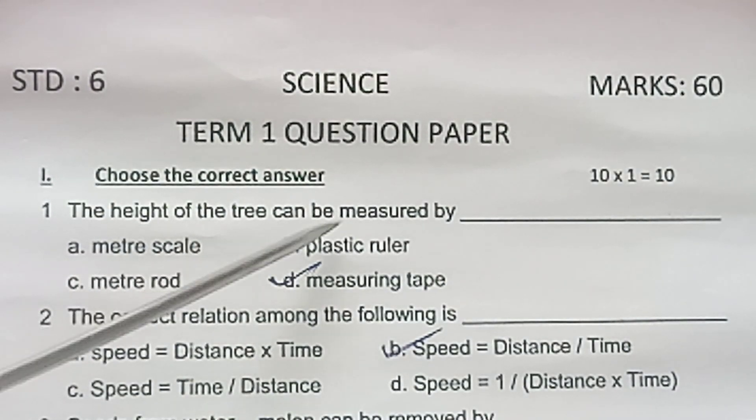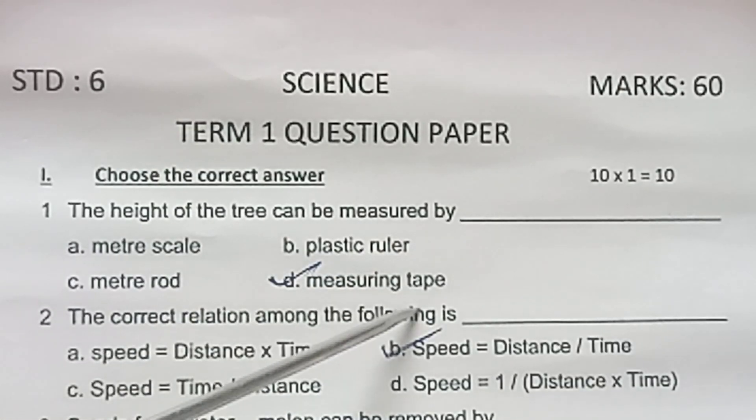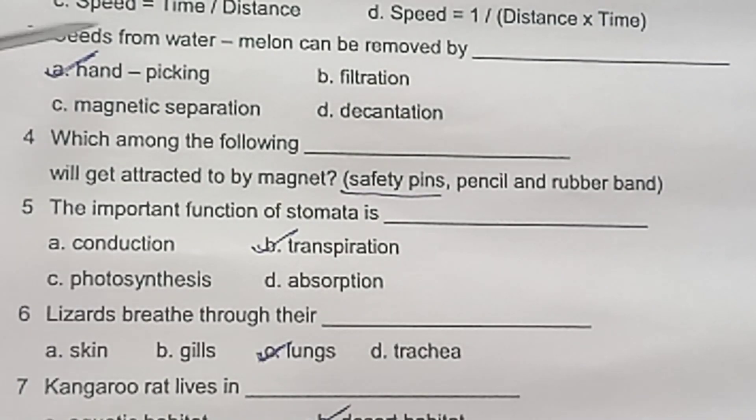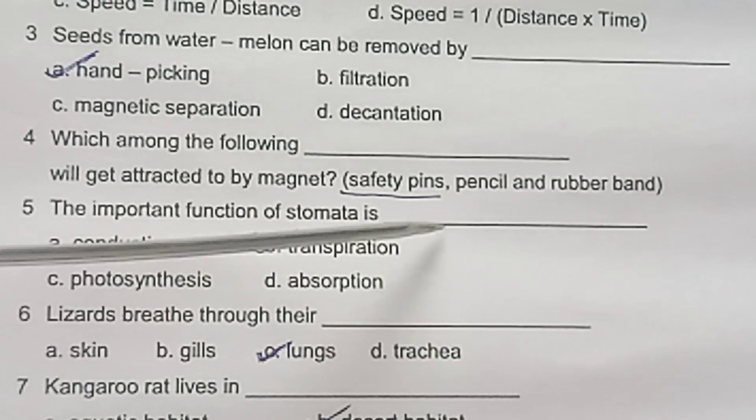The height of the tree can be measured by measuring tape. Relation among the following: speed is equal to distance by time. Seeds from watermelon can be removed by hand picking. Which among the following will get attracted by magnet? Safety pins.